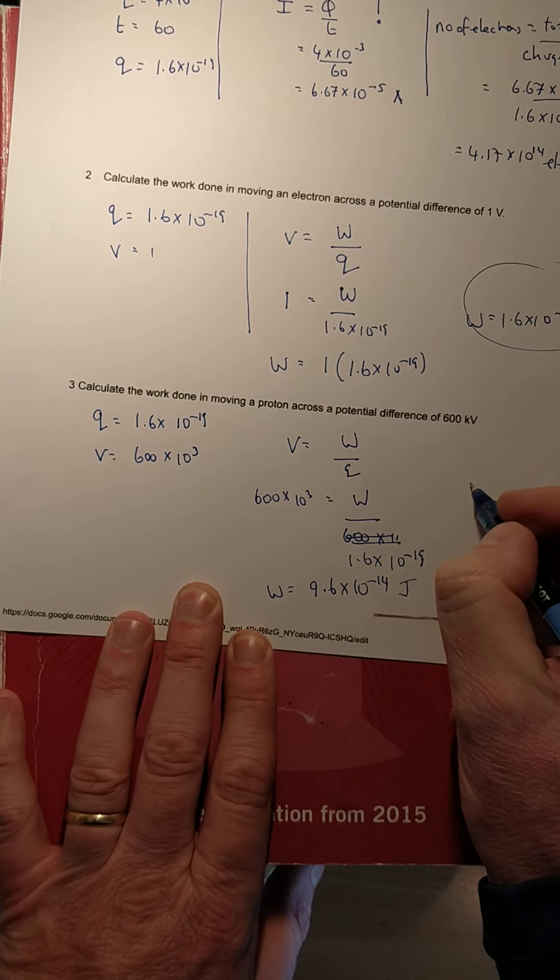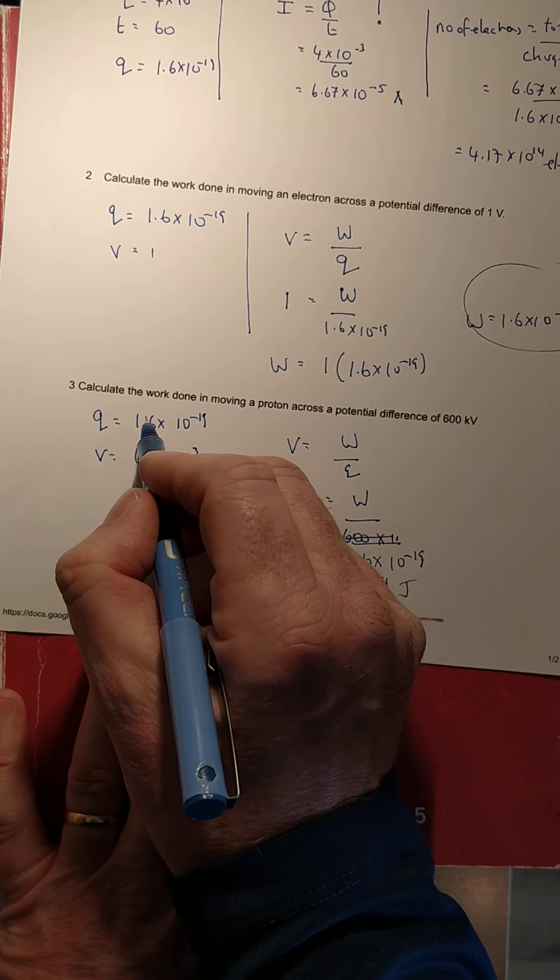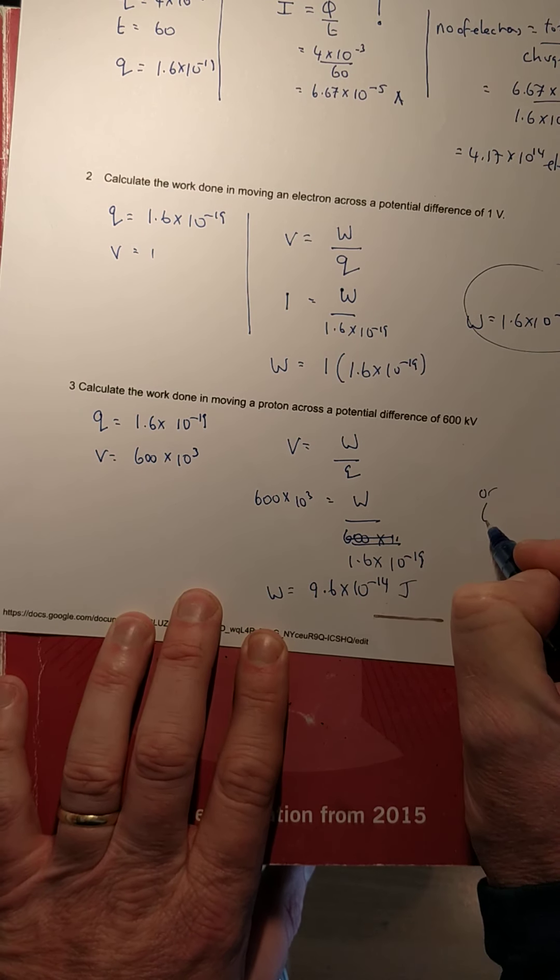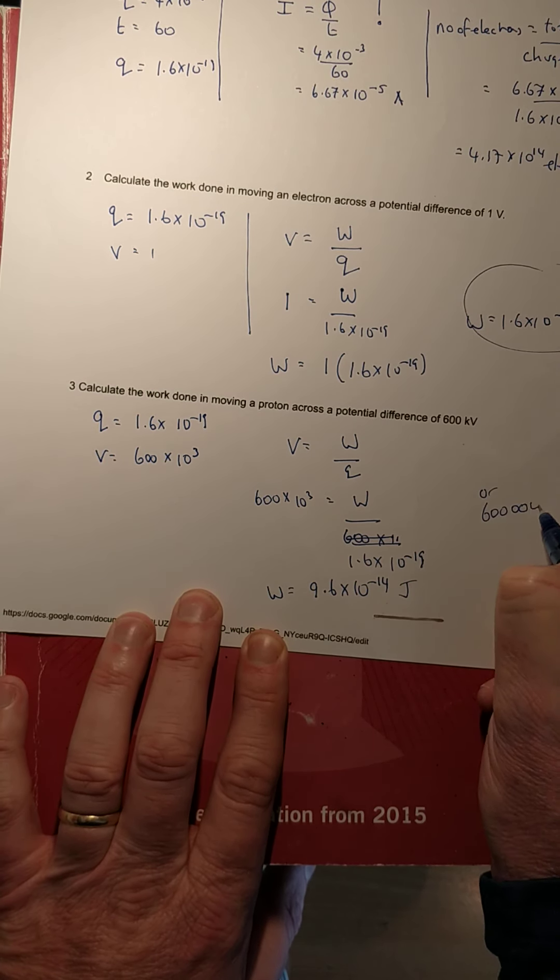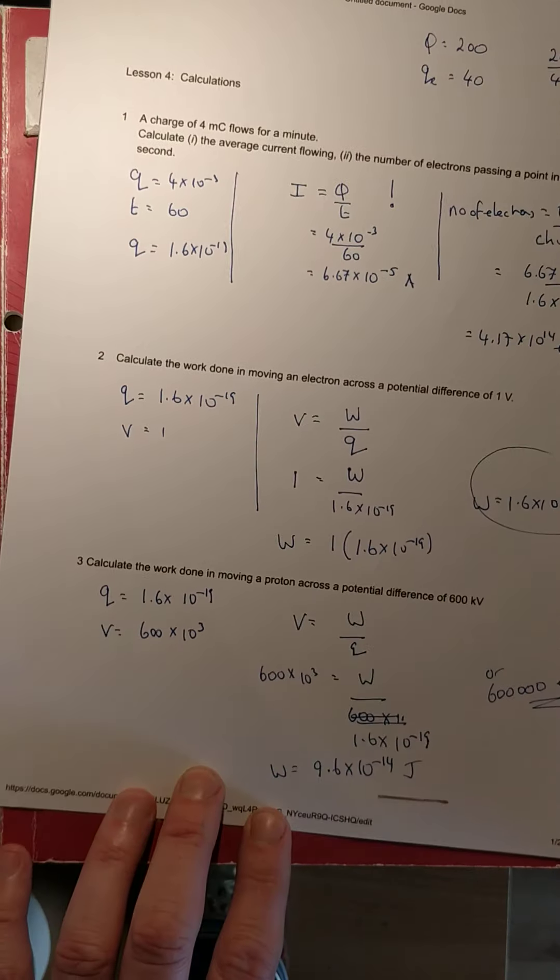Or as it happens, one volt would have been one electron volt, so as it turns out, this is 600,000 electron volts. There you go.